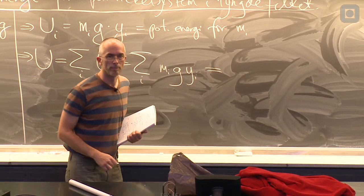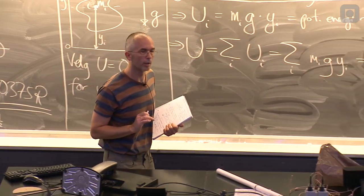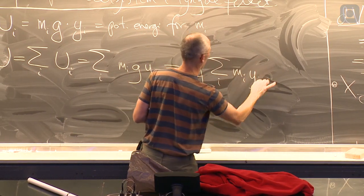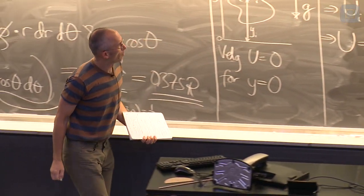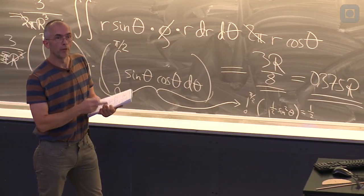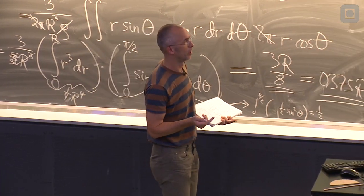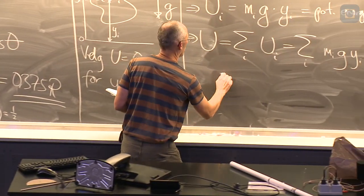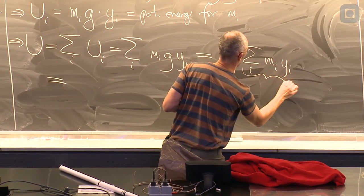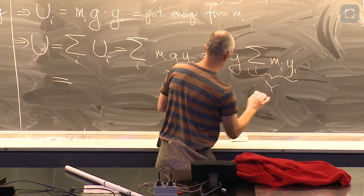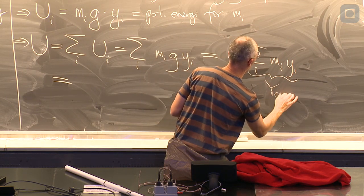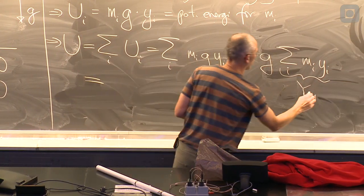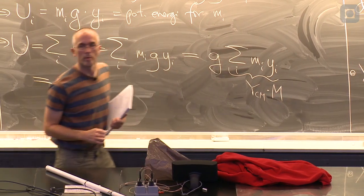G, den kunne tenkes å variere, men det er altså ikke tilfelle her. Den er konstant. Og den kan vi ta ut av summen. Da står vi igjen med en velkjent sum, nemlig summen over masse gange posisjon. Og det er jo nettopp det som inngår i tyngdepunktuttrykket. Det som står her, det er y-komponenten av massesenteret eller tyngdepunktet. Nesten. I hvert fall hvis vi ganger med systemets totale masse m.